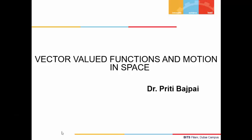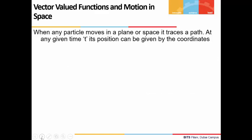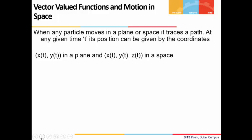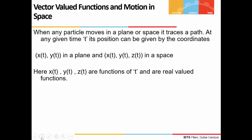Vector-valued functions and motion in space. When any particle moves in a plane or space, it traces a path. In other words, the locus of a moving particle gives us a particular type of curve. At a given time t, its position can be given by the coordinates x(t), y(t) in a plane, and if the particle is moving in space, its position is given by the coordinates x(t), y(t), z(t).